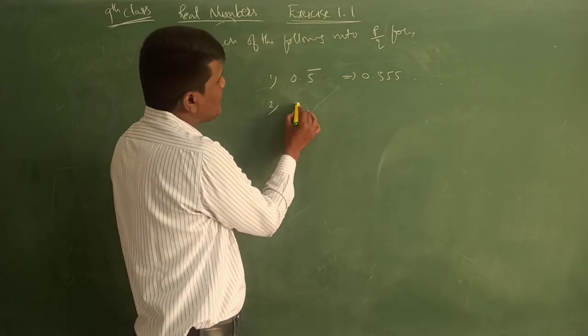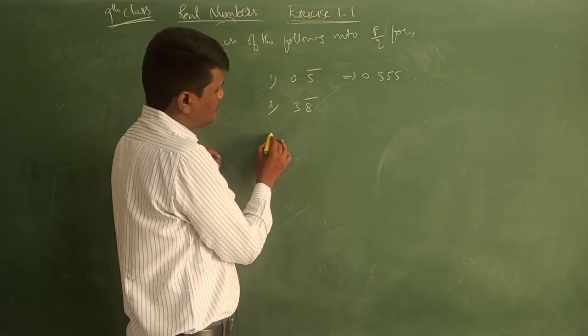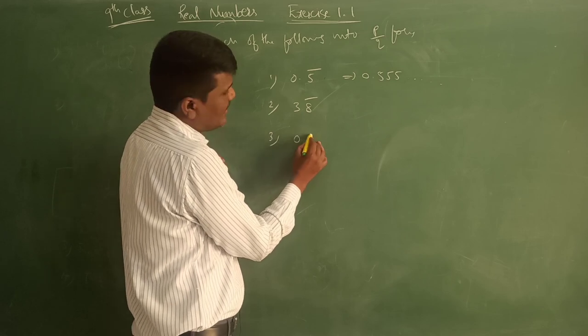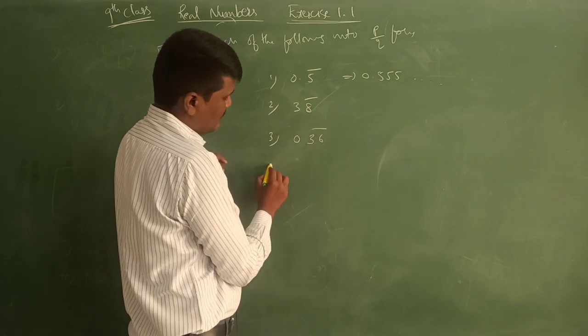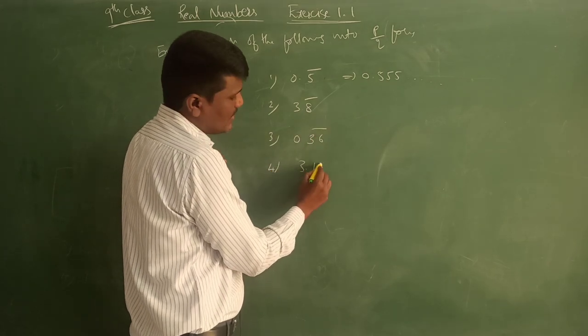Second one is 3.8 bar. This is how we'll write it. Third one, 0.36 bar. Fourth one, 3.127 bar.